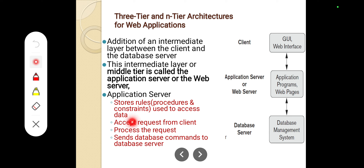The application server performs the following functions: it stores rules, which are procedures and constraints used to access data. It accepts requests from the client, processes those requests, and sends database commands to the database server. The database server executes the commands and returns results back through the application server to the client. This is called the three-tier architecture.